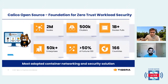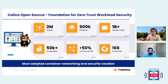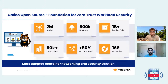Calico is one of the most widely adopted CNI and security solutions for Kubernetes. We are powering more than 2 million nodes across 166 countries. We've noticed that there's been a billion-plus Docker pulls for Calico, and it powers about 500,000 clusters across 50,000 enterprises.